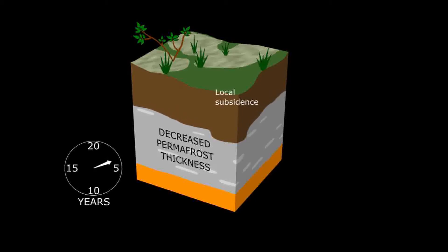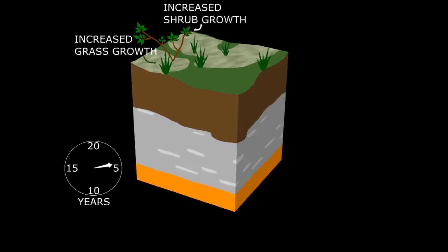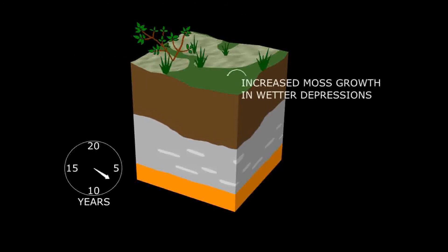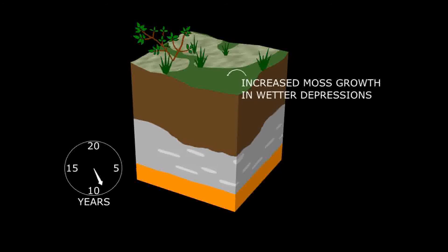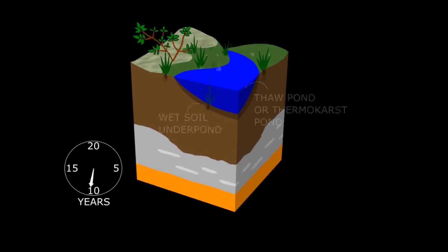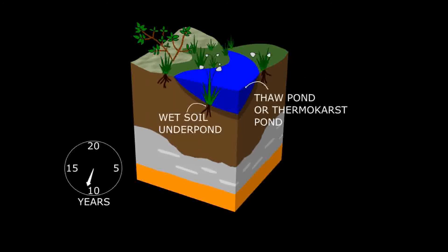As the ice lenses melt and the permafrost thaws, the soil surface in the active layer subsides and creates a depression or hollow. In this changed land surface, the patterns of plants change with mosses in the wet hollows and lichens on the dry mounds. As the climate warms further, plants with deep roots such as shrubs can grow. As more permafrost thaws, subsidence increases and ponds may develop in the wet hollows.